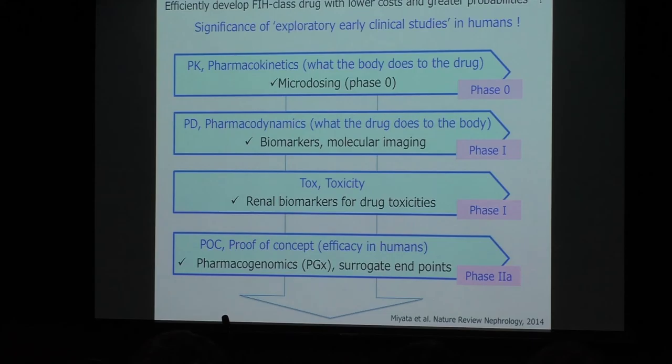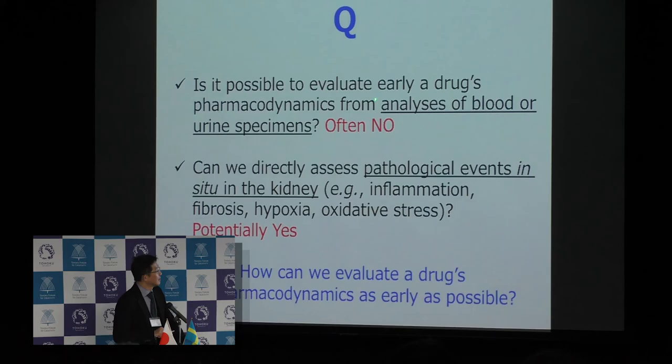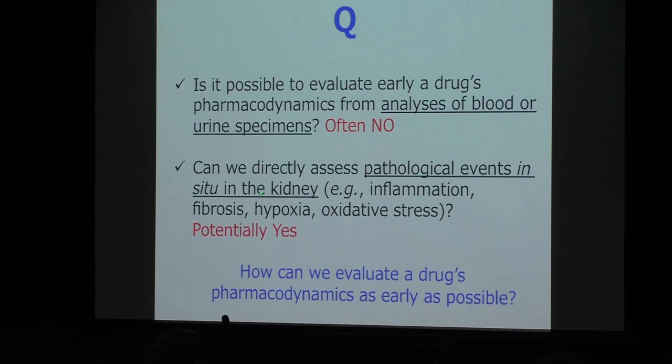Pharmacogenomics and surrogate endpoints are also very important tools for early clinical exploratory trials. Is it possible for us to evaluate early a drug's pharmacodynamics from blood or urine? Can we directly assess tissue phenomena in the kidney — for example, inflammation, fibrosis, and hypoxia? We are very much aware that we cannot do that by analysis of blood and urine alone. In fact, the latest molecular imaging technologies may enable us to do it.